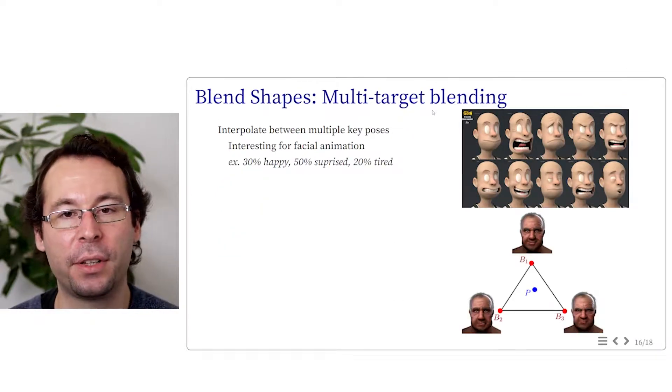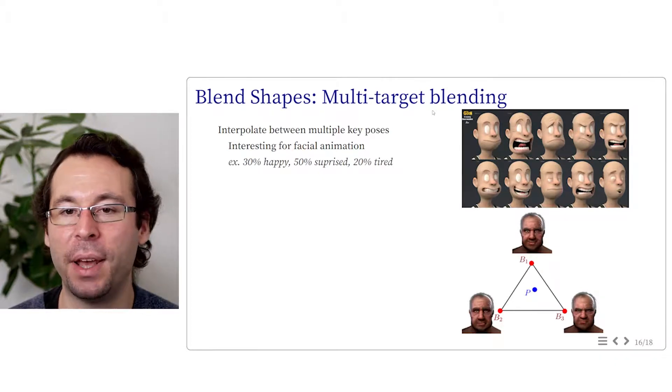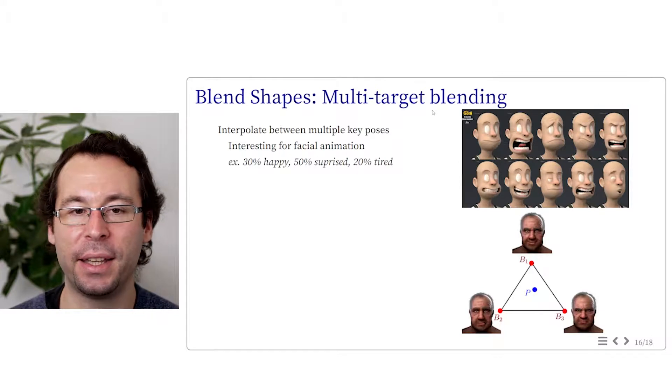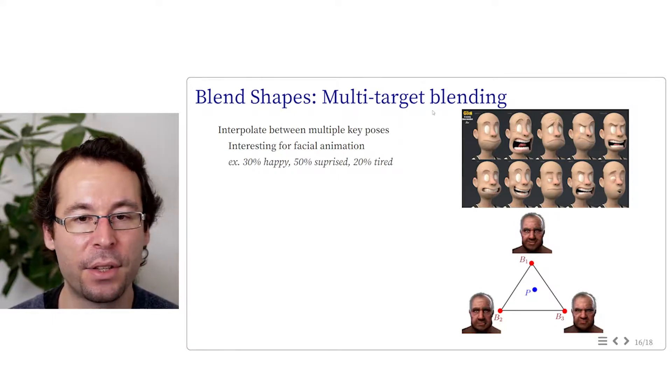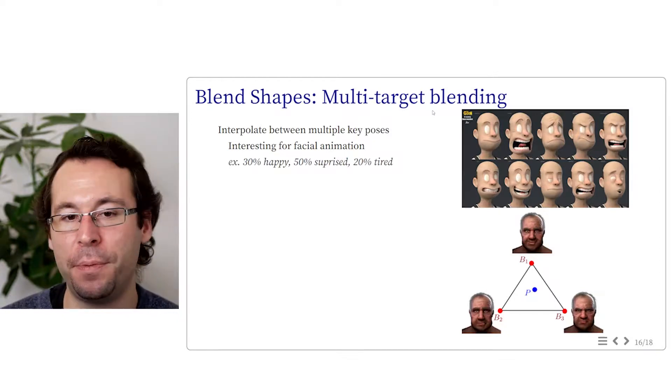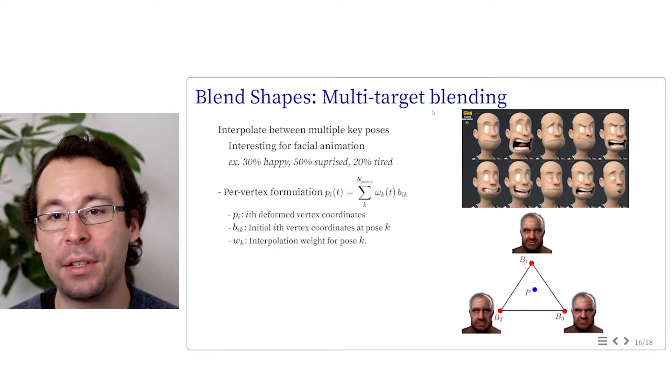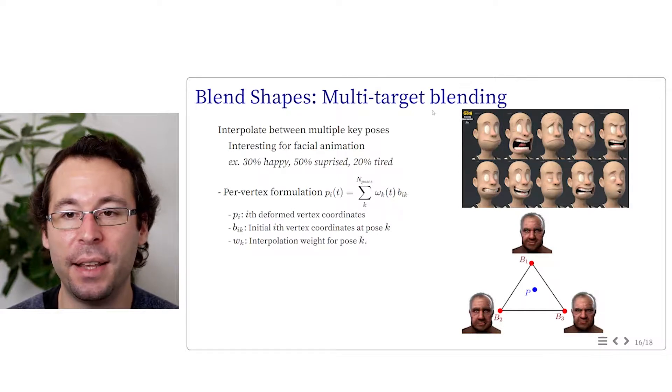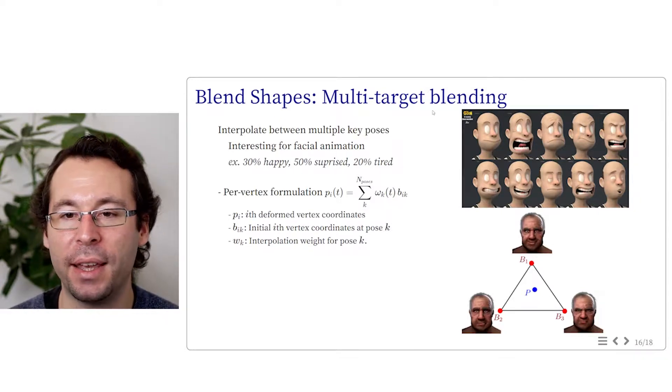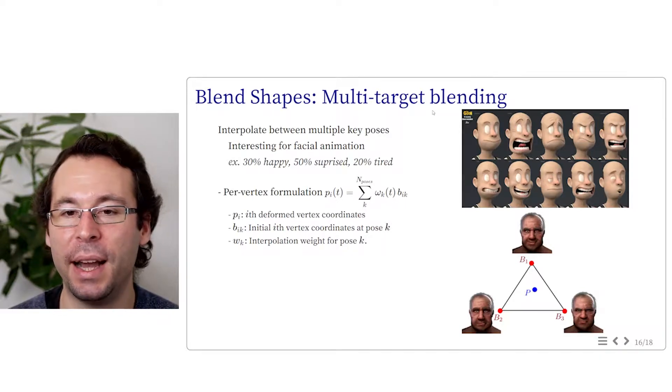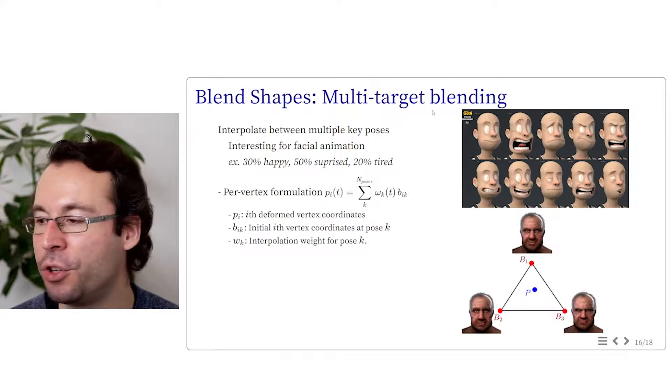But we can go further to mix different facial poses together. We can consider multiple poses and do a blending between them all together. This is called blend shapes or multi-target blending. This allows, for instance, to do a mix of happy expression with surprised one and tired one and so on. We are basically evolving within the n-dimensional space of basis described as the key phase expression. The formulation remains straightforward. It's a simple barycentric interpolation saying that p of vertex i at time t is given by the sum of all the poses k of the weights omega k at time t multiplied by the vertex position b i k for the basis pose k. Of course, in this case, the sum of k of the weight omega k should be equal to 1.